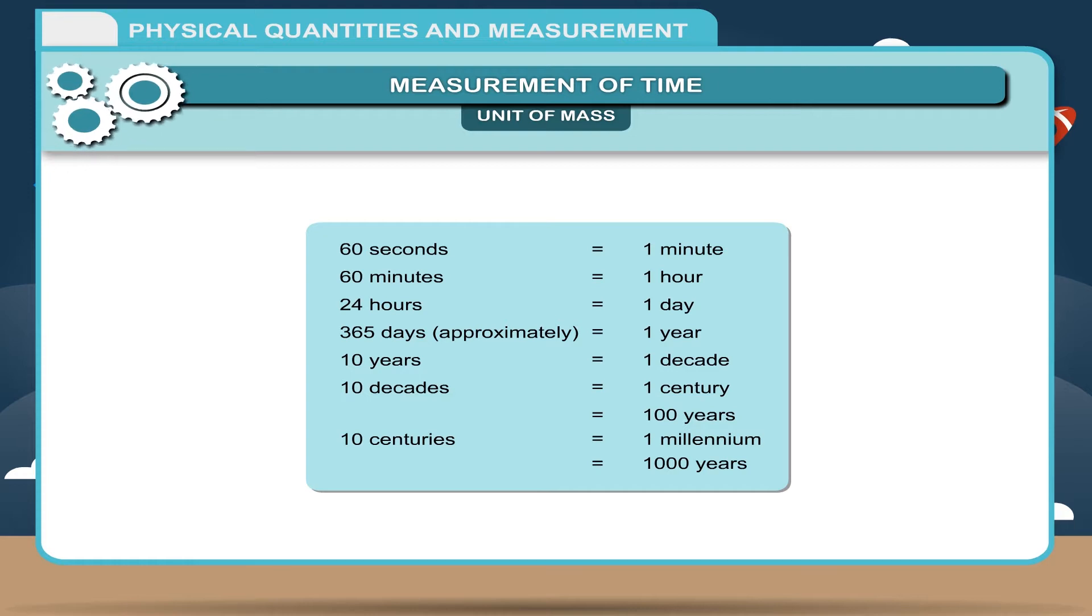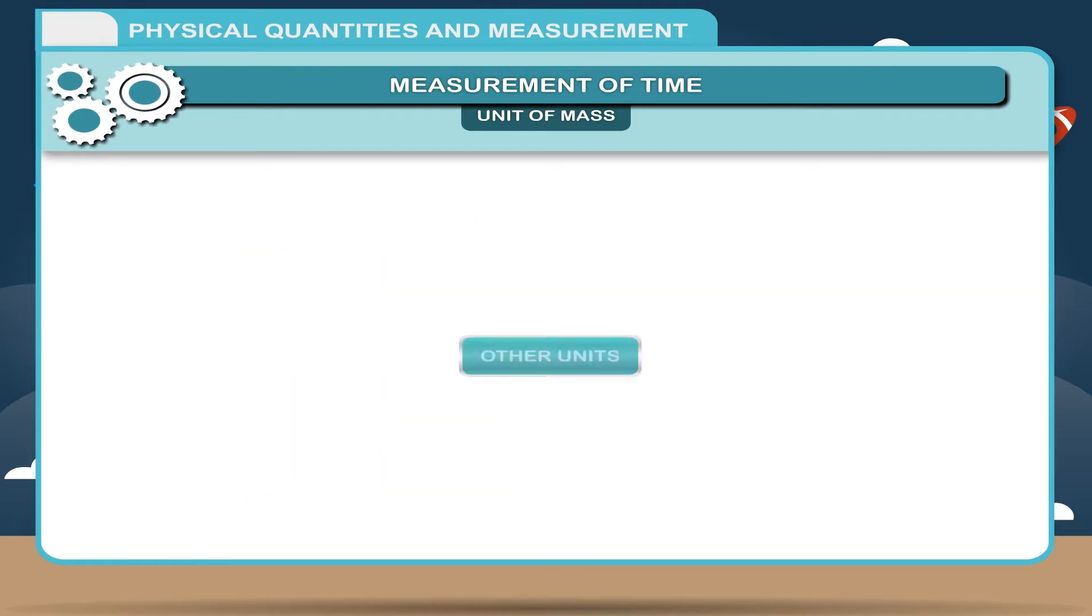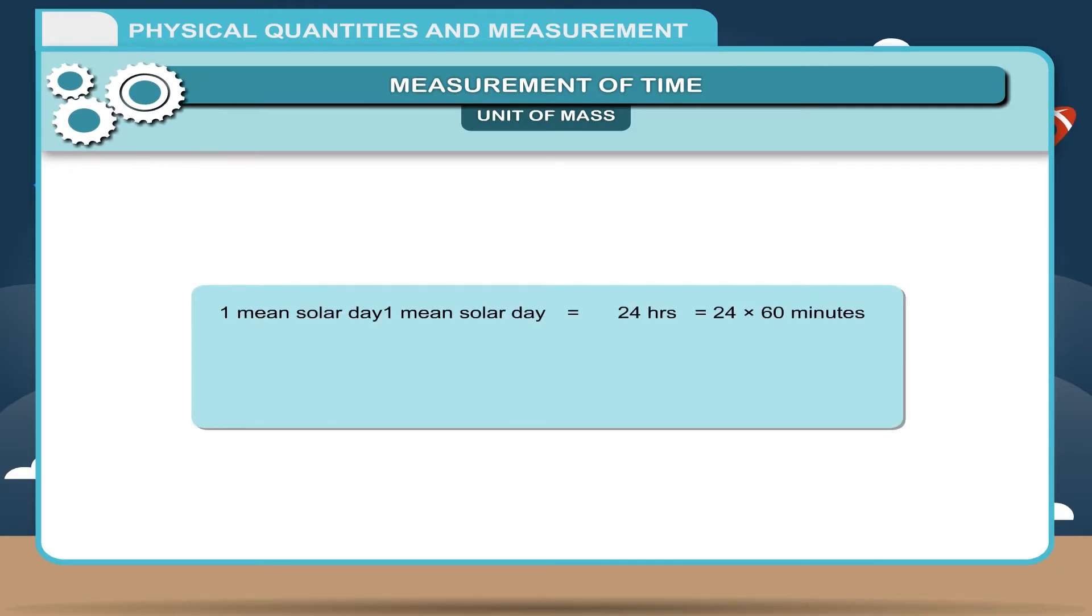Other units. One mean solar day equals 24 hours equals 24 into 60 minutes equals 24 into 60 into 60 seconds, which equals 86,400 seconds.